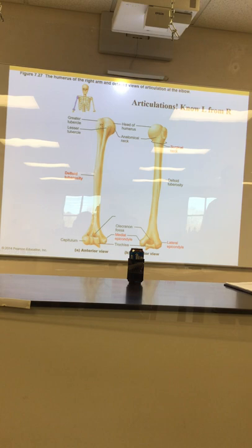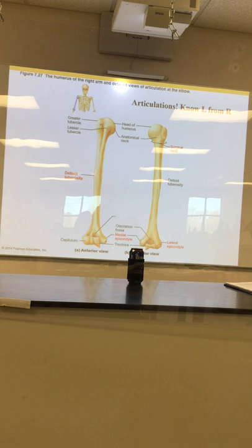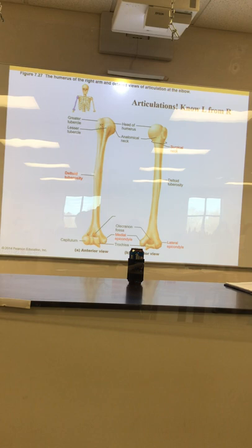Trochlea and capitulum. Just like smooth muscle has a certain appearance — like a river flowing — I use that same logic here. Trochlea sounds very sharp and pointy to me, so it's the trochlea. Capitulum — nice and round — capitulum is the round structure. The trochlea is the sharp pointy end. Here's the radius and the ulna fitting together.